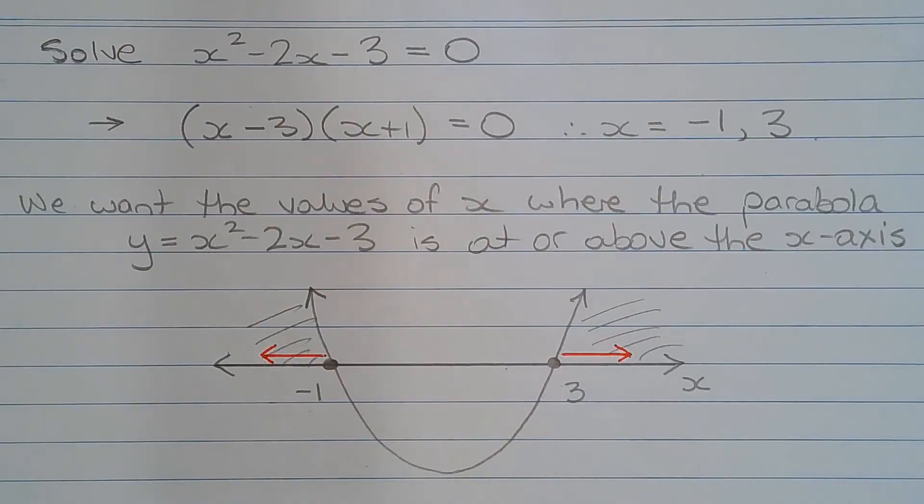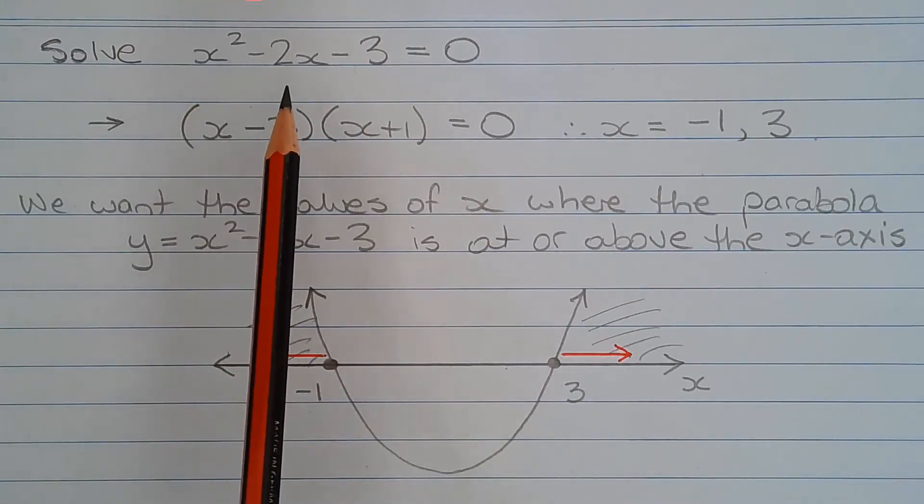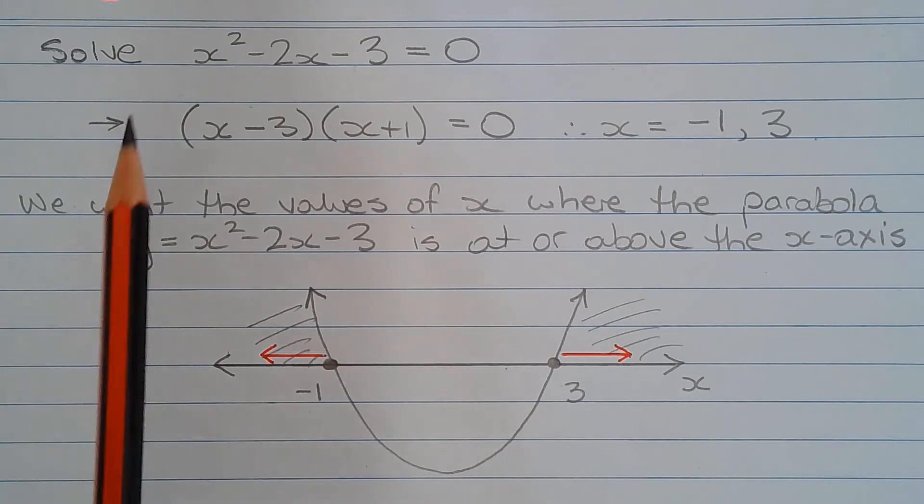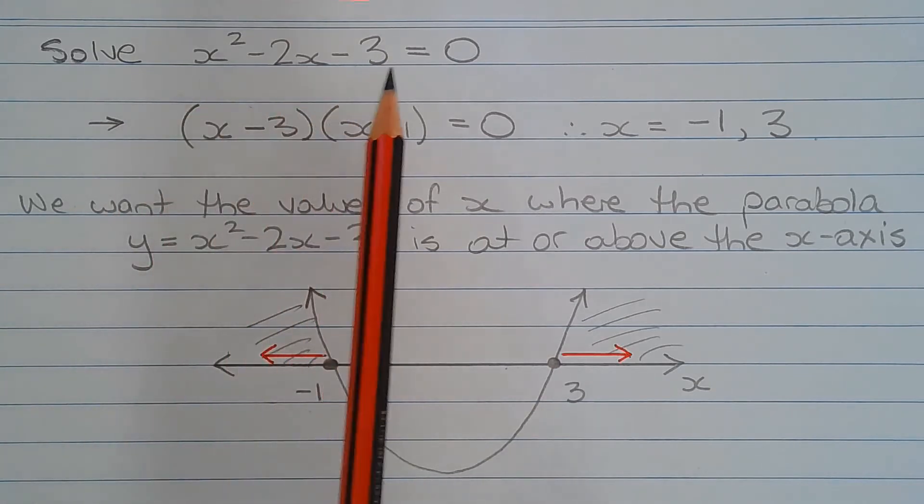This question may be solved geometrically. x squared minus 2x minus 3 represents a concave up parabola, and the x-intercepts may be found by solving the quadratic equation x squared minus 2x minus 3 equals 0.